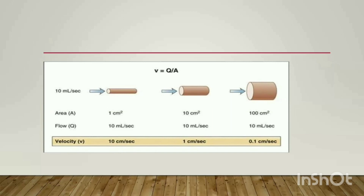A diagram is shown here. First, the velocity formula is given: velocity is equal to Q over A, where Q is the flow rate. In the first example, if the area is one centimeter squared and the flow rate is ten milliliters per second, then the velocity calculated is ten centimeters per second.